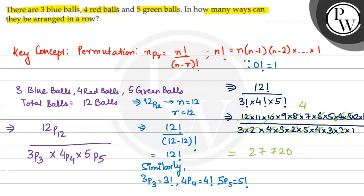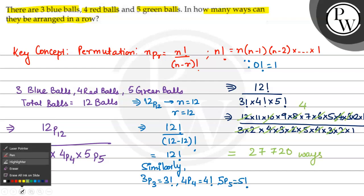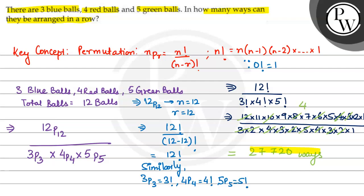That equals 27,720 ways. So the final answer is 27,720 ways. I hope you understood it well.